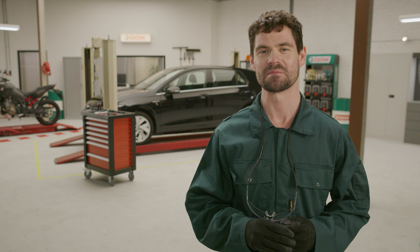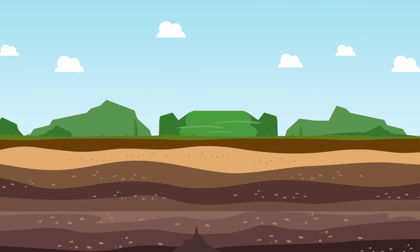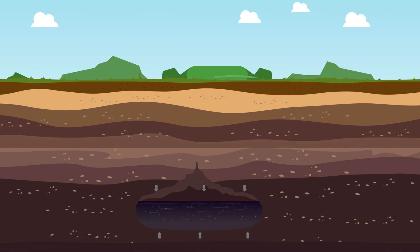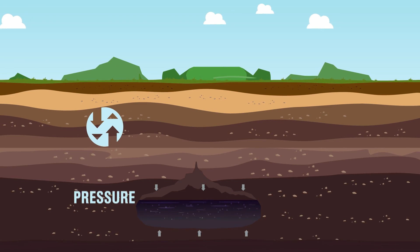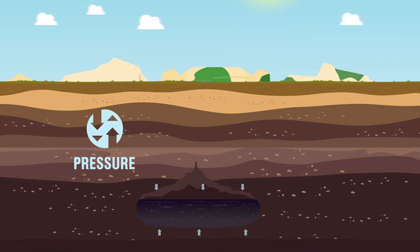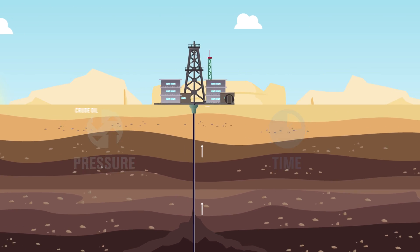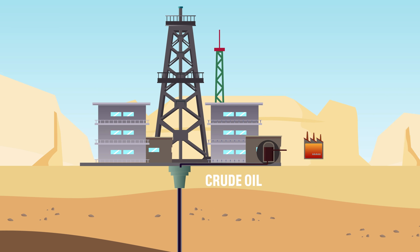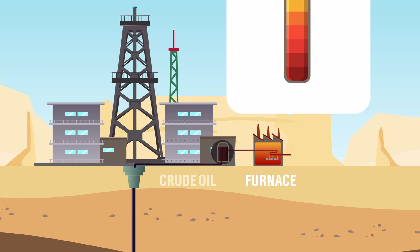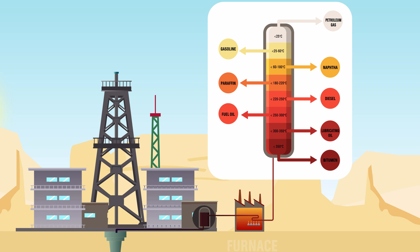Let's get into it. Conventional base oil is an organic substance which is formed deep underground due to enormous pressure at high temperatures for long periods of time. This oil is extracted from the ground, boiled and condensed in refineries, and then formulated into a final product.